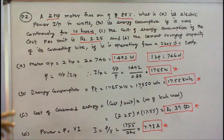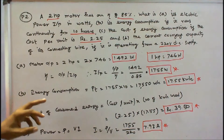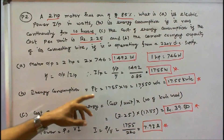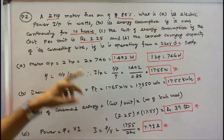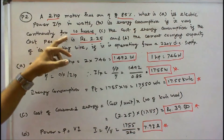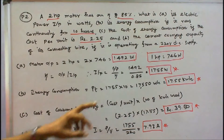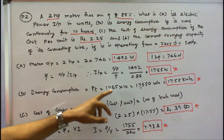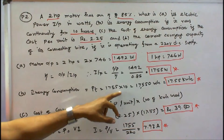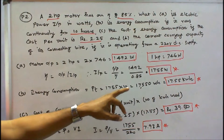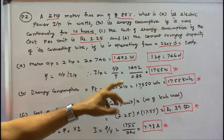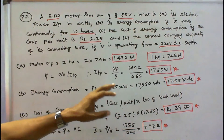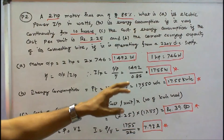Next we have to find energy consumption. Energy consumption is equal to power into time. The time is given as 10 hours and the power is 1755 W. So 1755 into 10 is equal to 17,550 Wh, or 17.55 kWh.